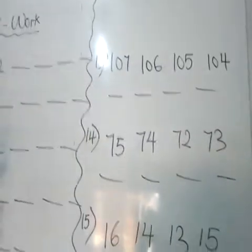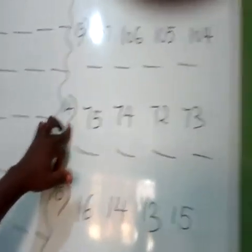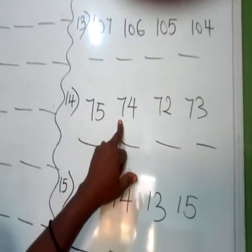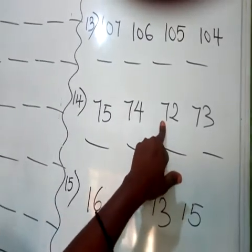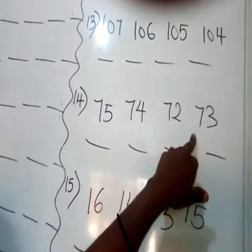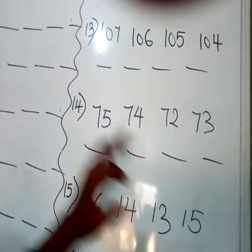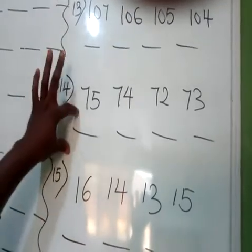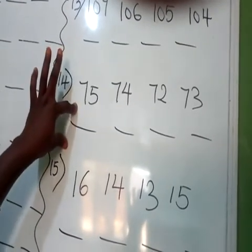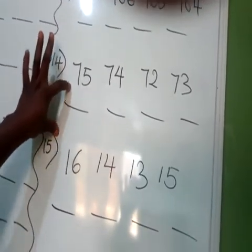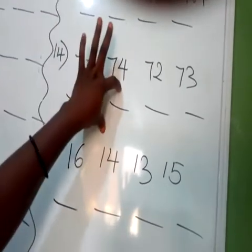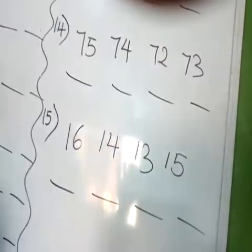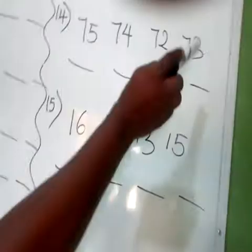Number 14: we have 75, 74, 72, and 73. The first number is 72. Write it down: 7 and 2 is 72, 7 and 3 is 73, 7 and 4 is 74, followed by 75. Write it down correctly.